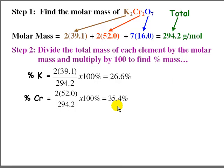Try oxygen yourself. Okay, if you tried it, it should be 7 times 16 over 294.2 times 100, which comes up to 38.1.